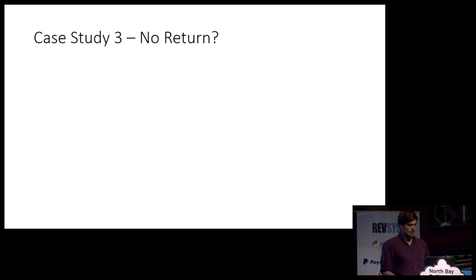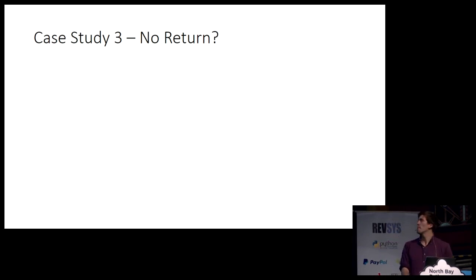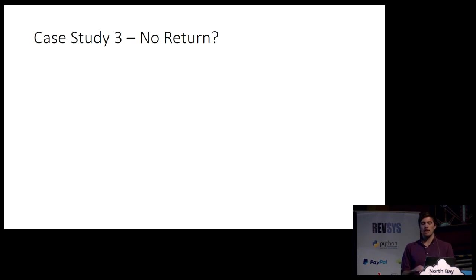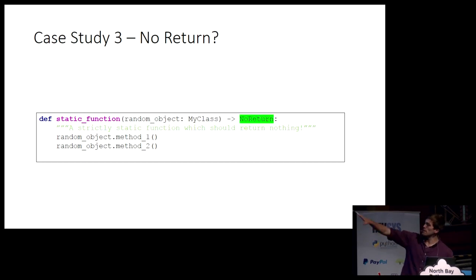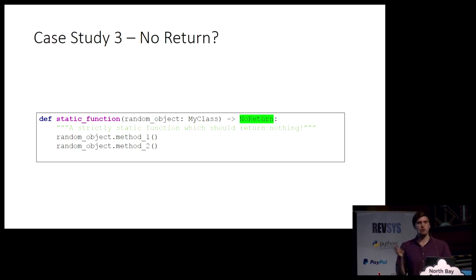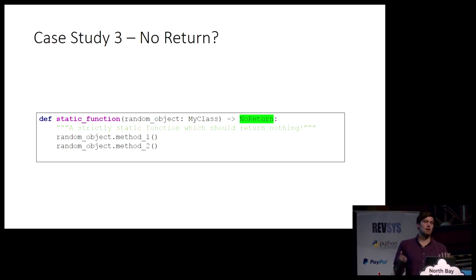No returns. Every Python function technically returns None, but sometimes your design intent is to write a function that should never be used by anyone else to return a value — it should be a completely static thing. If you've got a completely static function, you can annotate it with a NoReturn type, which is really useful, because it stops people using that function and assigning a None value to a variable — MyPy will error it.